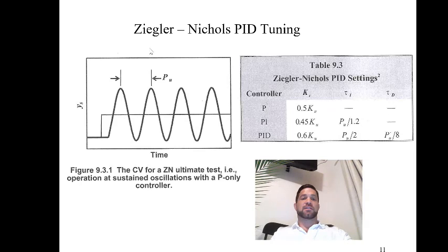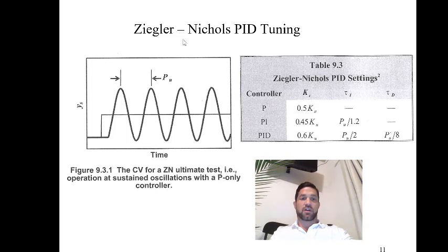So the Ziegler-Nichols tuning method is a fairly straightforward method. It's a closed loop process, which means your controller is turned on.